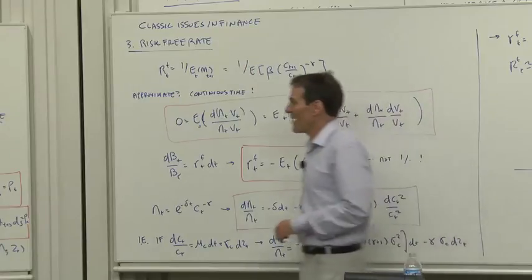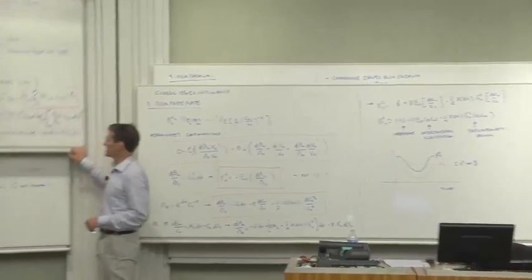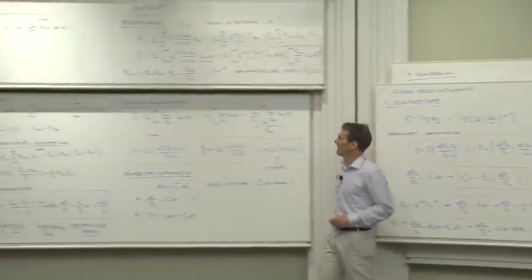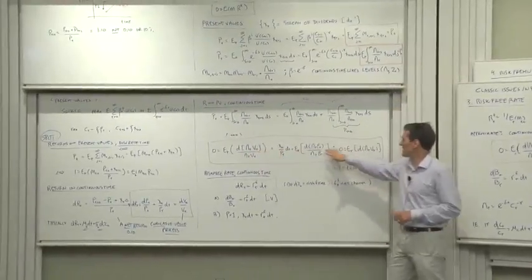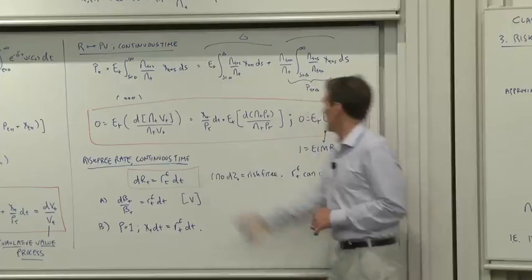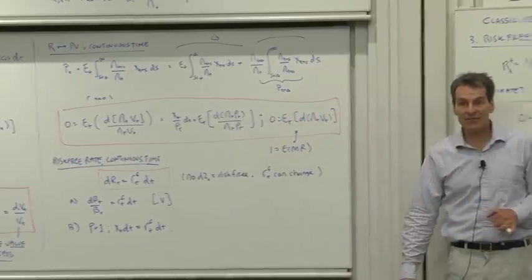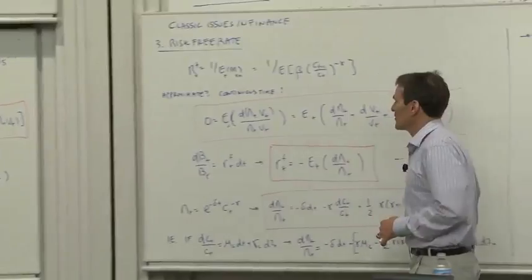So as a reminder, how does continuous time work? Last time, we thought about what our basic P equals E of mx looks like in continuous time, 0 equals E of d lambda v. Let's apply that to the case of our risk-free rate.